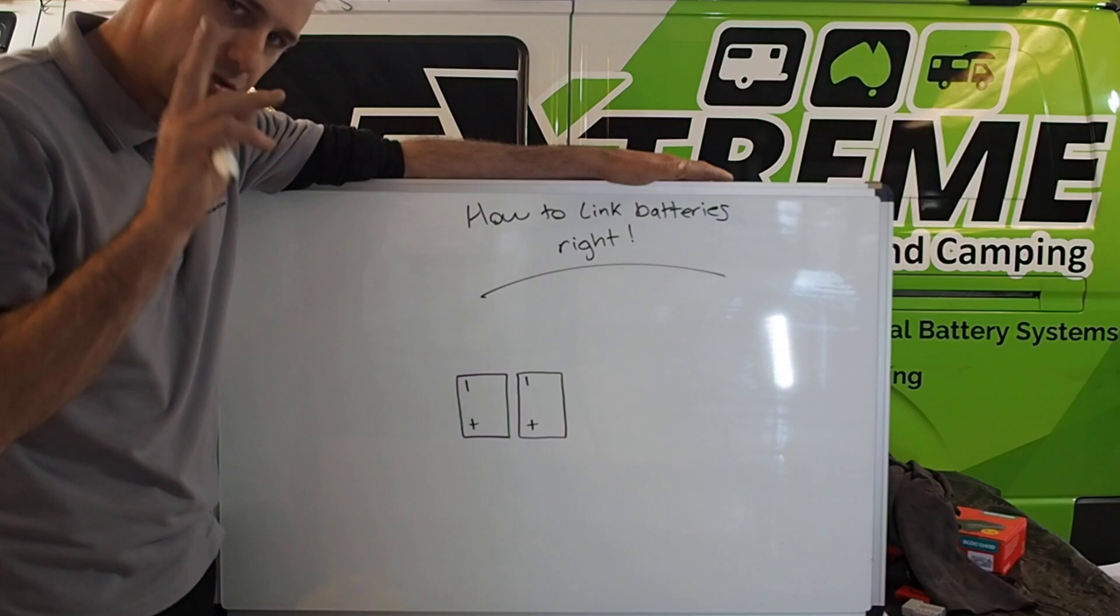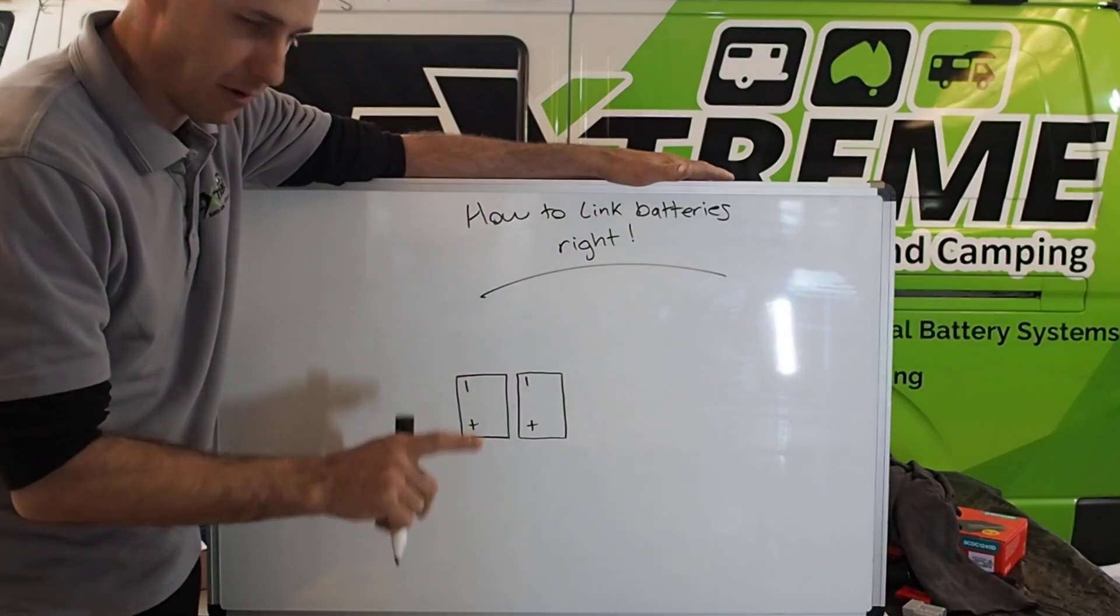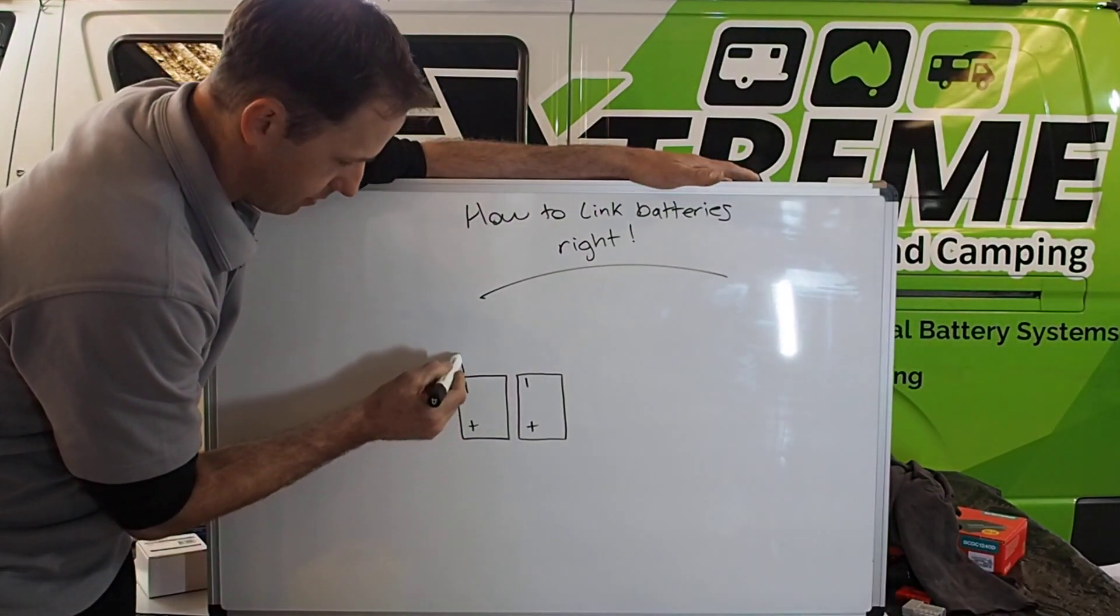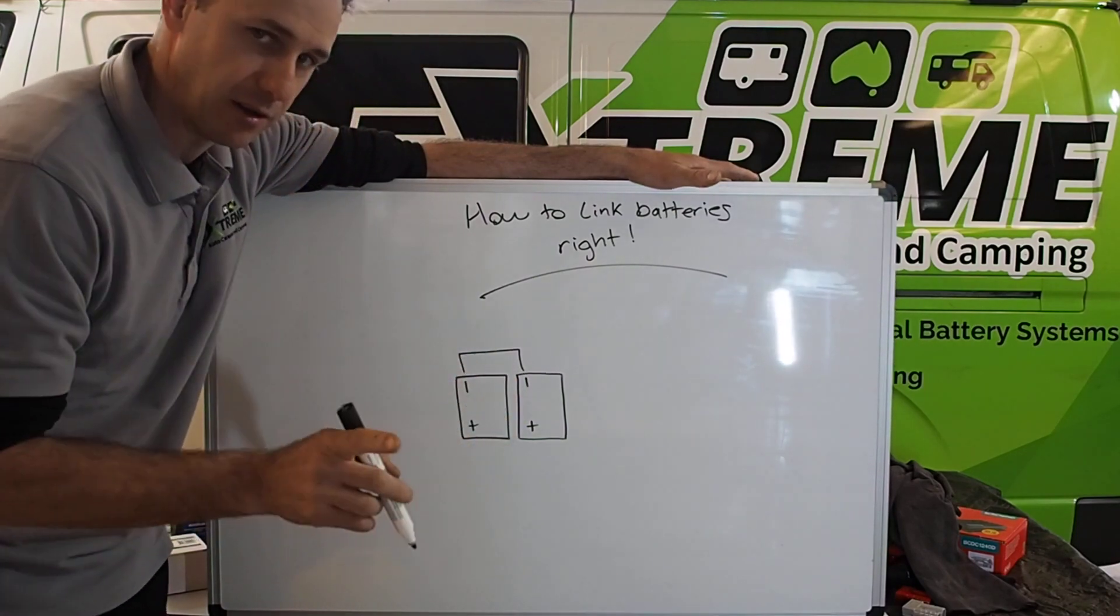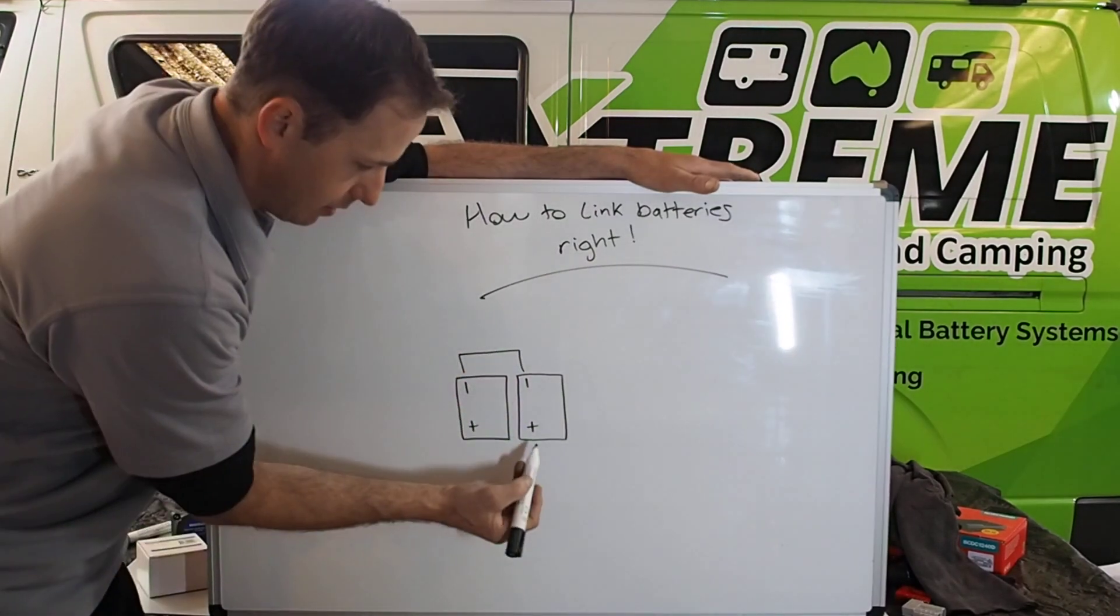So I'll use a common two-battery setup. Very simple. Join your negatives—this is for a parallel 12-volt setup. Join your positives.